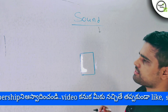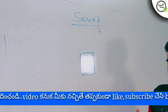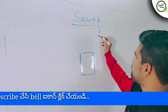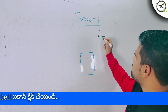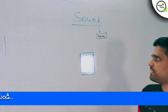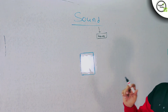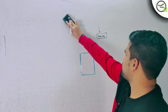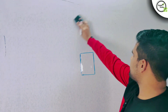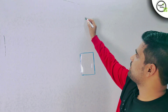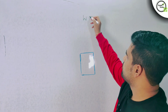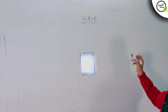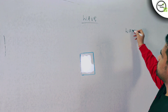When we talk about sound, we talk about traveling and producing waves. The main thing we talk about when discussing sound is waves. In this class we will discuss waves clearly, and in the next class we will discuss the sound characteristics. So, the waves.